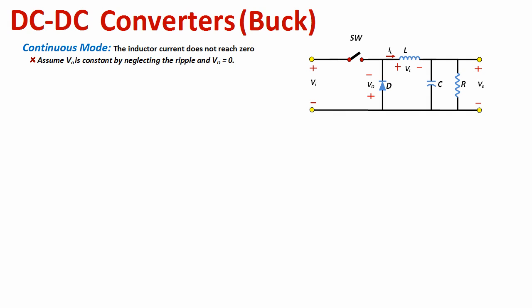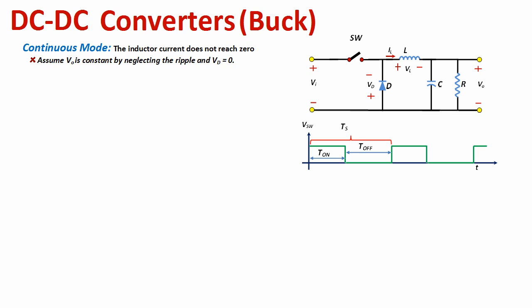The switch is going to be on and off, and we control Vout by controlling what we call the duty cycle — the width of the pulse when the switch is on. Looking at the graph of the rectangular pulse controlling the switch: the time period for the switching frequency is TS. When the switch voltage is high, that is the switch on-time, and the other portion is the off-time.